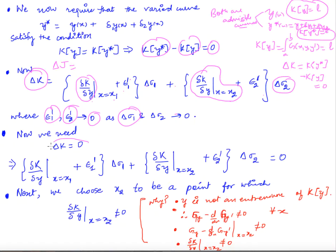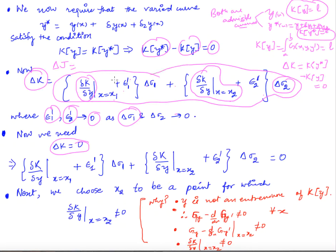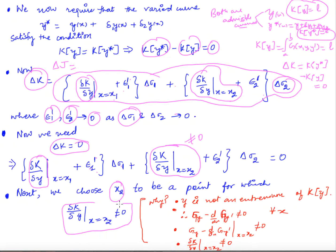We need δk = 0, so this whole expression should equal 0. Now we will choose x₂ such that the variational derivative of k with respect to y at x₂ is not equal to 0. I mentioned at the beginning that we would have a condition on x₂ — this is that condition. We want to verify whether such a point x₂ exists where this variational derivative of k with respect to y is nonzero.